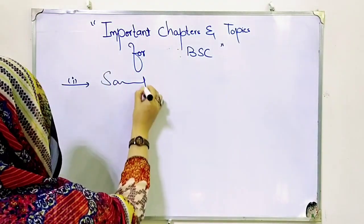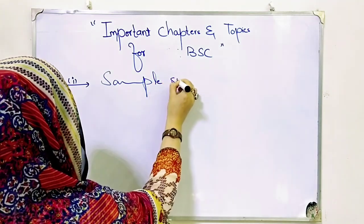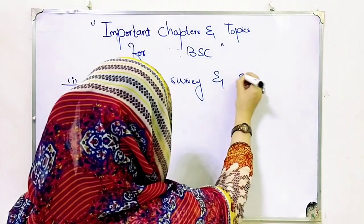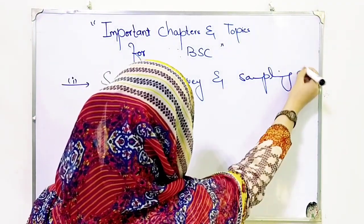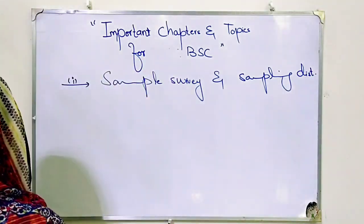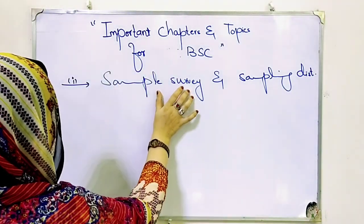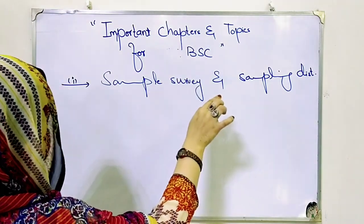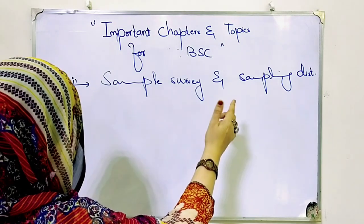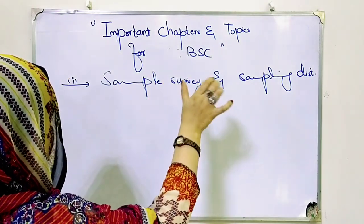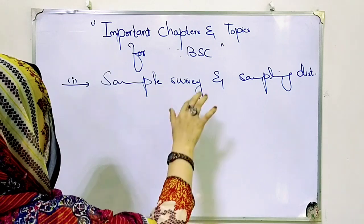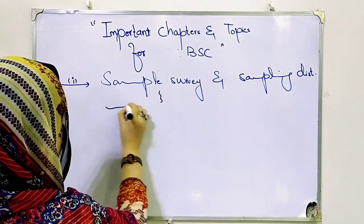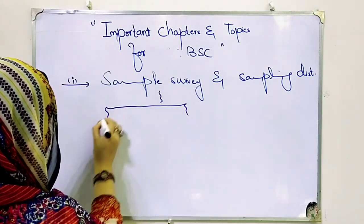Sample Survey and Sampling Distribution — this chapter is very important. The related theory is very important in this chapter. You also have the advantages of sampling, population, sample, and the sampling process of selecting a sample — this is called sampling. You have to keep these things in mind. A very important topic is that you have to keep probability and non-probability sampling in your mind.